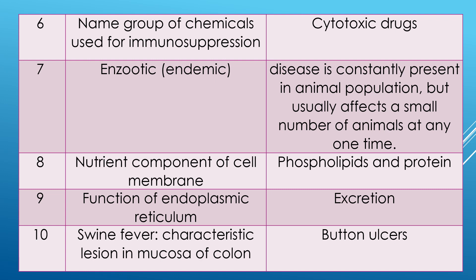Question 7: enzootic or endemic diseases. In animals it is called enzootic; in human beings it is named endemic. Answer: a disease is constantly present in an animal or human population, but the disease usually affects a small number of animals at any one time. If a large number of animals are affected at any one time, then it is called epizootic or epidemic; but in enzootic only a small number of animals are affected at any one time.